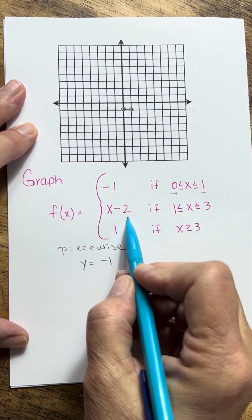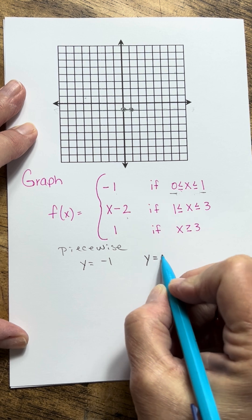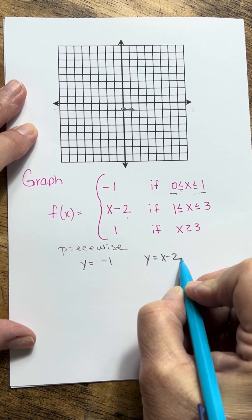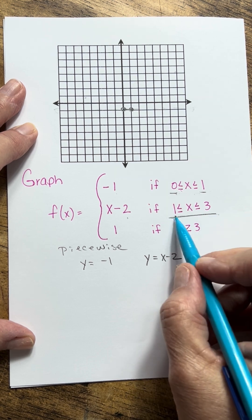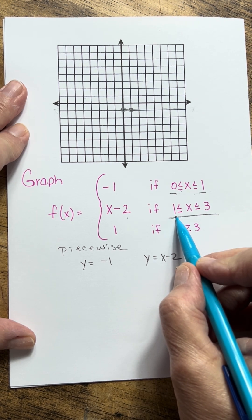Now we're going to do the same thing with this second one. I'm going to take y equals x minus 2, and I want to graph it, but I'm just going to keep the part that is in between x is equal to 1 and 3.